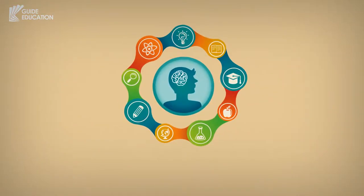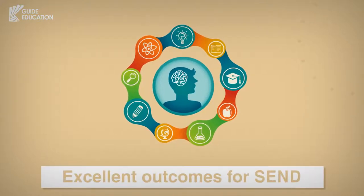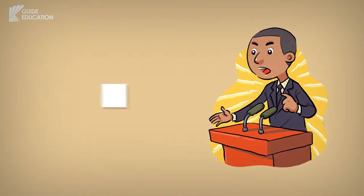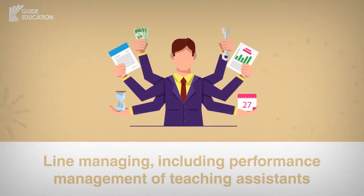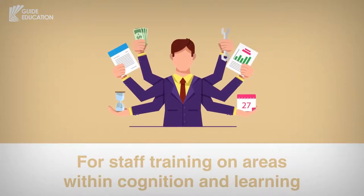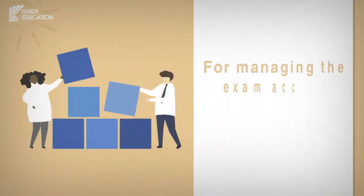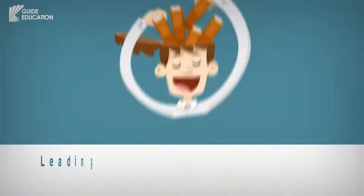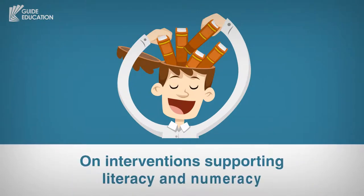So within cognition and learning, you might have a head of center. That would be a teacher from any subject with a reputation for excellent outcomes for SEND. You might call them a deputy SENCO or a head of center with responsibility for cognition and learning. They'd be responsible for line managing, including performance management of teaching assistants, for staff training on areas within cognition and learning, for tracking and accelerating the progress of students with cognition and learning needs, for managing the exam access arrangements process, and leading on the delivery of interventions within cognition and learning, primarily interventions supporting literacy and numeracy.